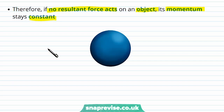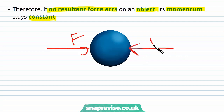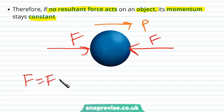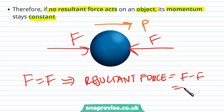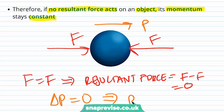For example, here we have a ball with a force F acting in one direction and another force F acting in the opposite direction, and this ball has a momentum P. If these two forces are equal, the resultant force is equal to F minus F, which is zero. This tells us that the momentum is not changing, so the momentum must be constant.